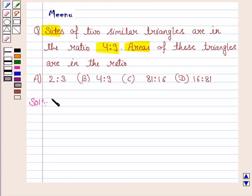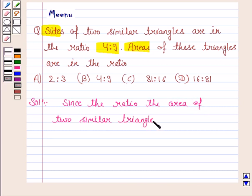To answer this question we need to know that the ratio of the areas of two similar triangles is equal to the square of the ratio of their corresponding sides.